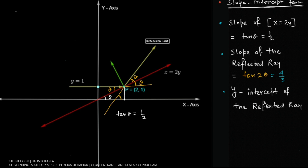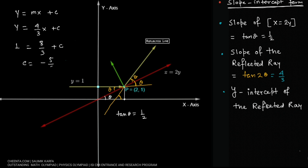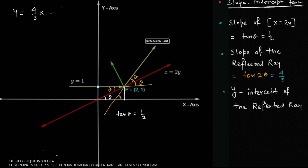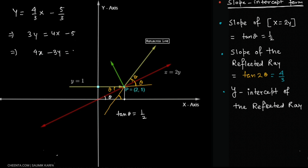Assuming the equation of the reflected ray is y = mx + c, we already know m = 4/3, so the equation is y = (4/3)x + c. We also know the reflected ray passes through point (2,1), so substituting: 1 = 8/3 + c, giving c = -5/3. Therefore the equation is y = (4/3)x - 5/3, which simplifies to 3y = 4x - 5, or 4x - 3y = 5. This is our required equation.